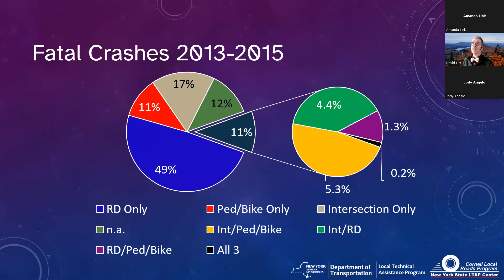Where do we get the best bang for our buck? Let's look at the kinds of fatal crashes. Roadway departure, pedestrians and bicycles, and intersections are the three big breakdown areas. Roadway departures are the biggest — over half of all fatals involve someone leaving the roadway, either going off to the side or crossing the center line for a head-on. Intersections are also a big category, along with pedestrians and bicyclists.